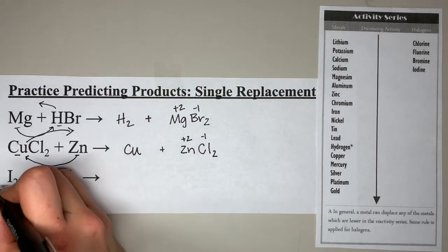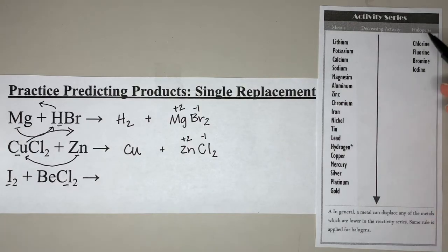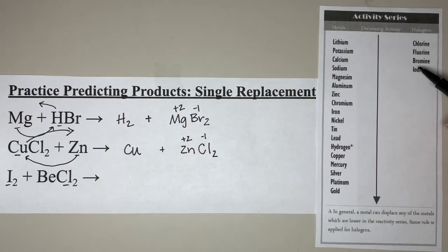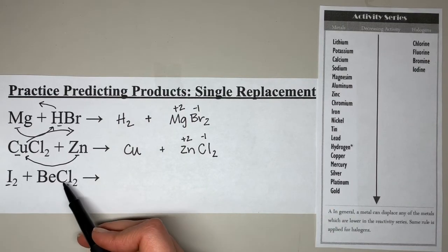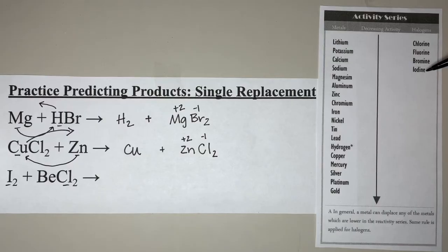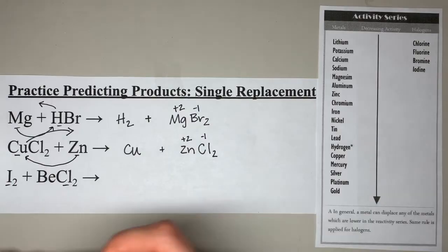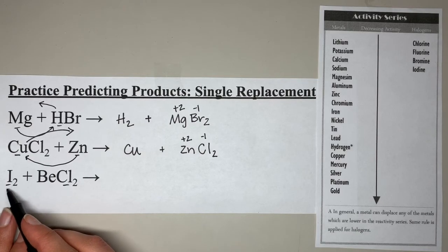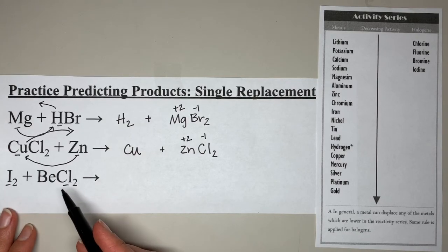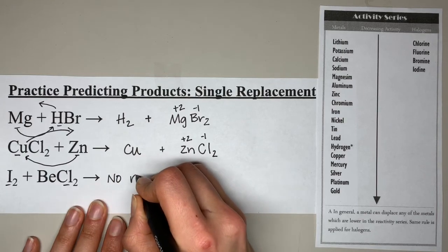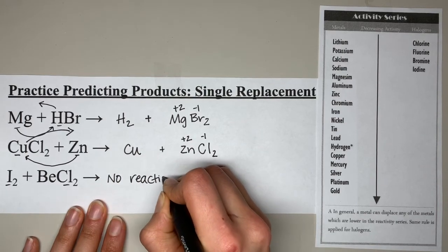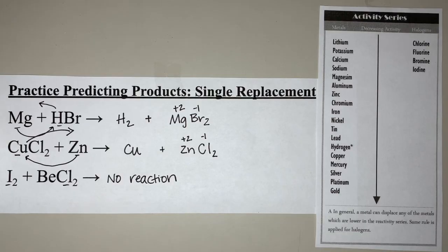For the last practice problem, there are two halogens, so we look at the halogen side of the activity series. In order for iodine to replace chlorine, iodine has to be higher than chlorine — which it's not. Therefore, iodine is not going to replace chlorine in this compound, and we have no reaction. And that is how you predict products for single replacement reactions.